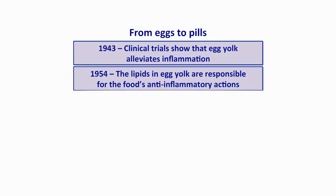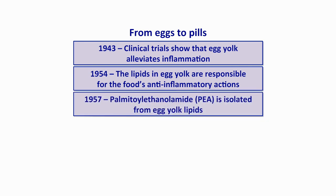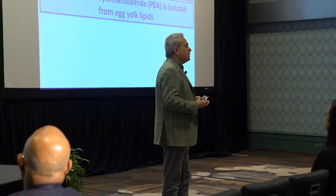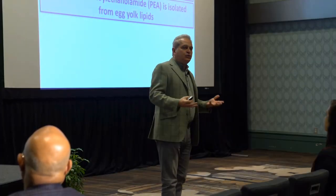Scientists discovered that it was a lipid — not the protein, not the sugars, but rather the lipid component, which in egg yolk is very abundant. And a few years later, in 1957, PEA, which at the time was a novel lipid — nobody had ever seen this structure in nature — was isolated from egg yolk and shown to possess at least some of the anti-inflammatory effects that people had ascribed to egg yolk.